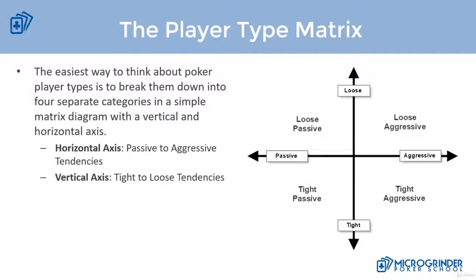In this video, we're going to talk about something that I call the player type matrix. In the lectures following this one, we're going to talk about good player types and bad player types. But before we do that, I want to talk about how we can easily categorize our opponents into four separate categories with this very simple diagram.